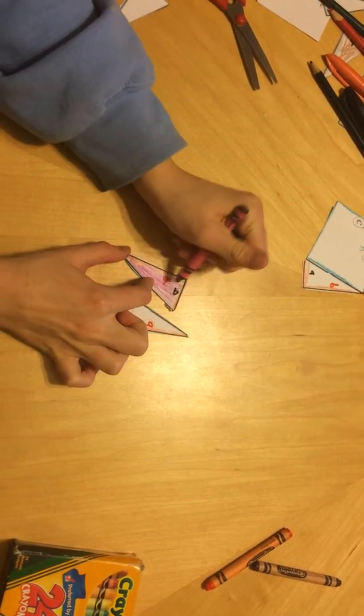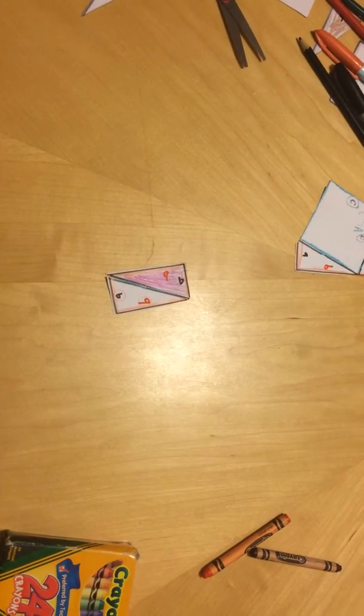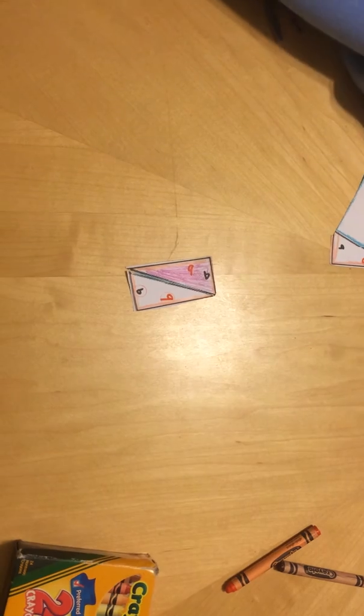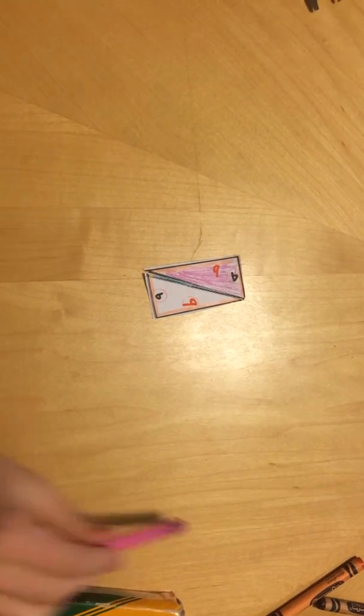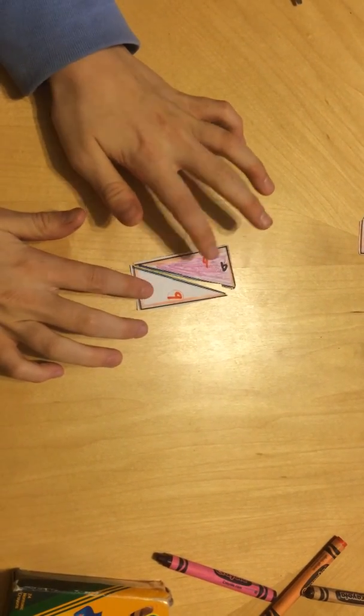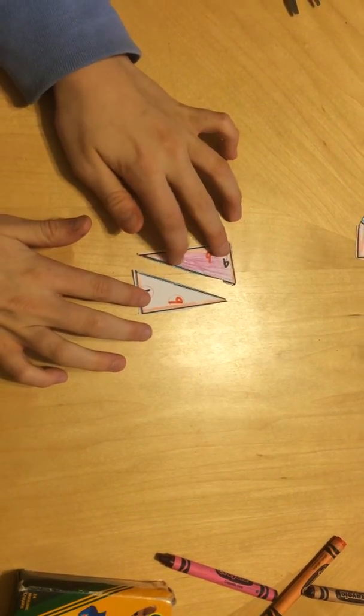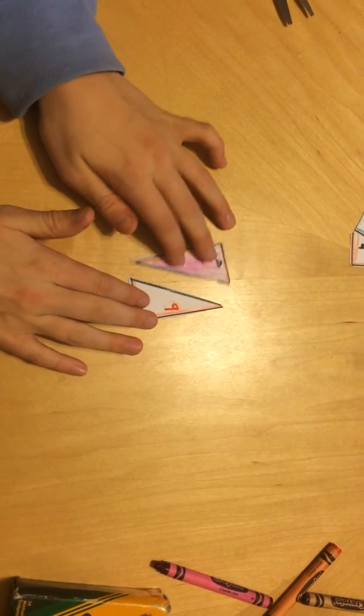But when you do your hands-on activity, color it with the macaroni and cheese. Alright, after that, you see that half of the triangle is a triangle, and that is half the area.